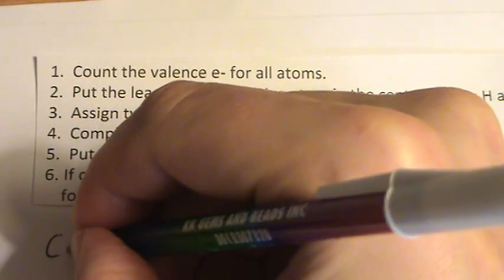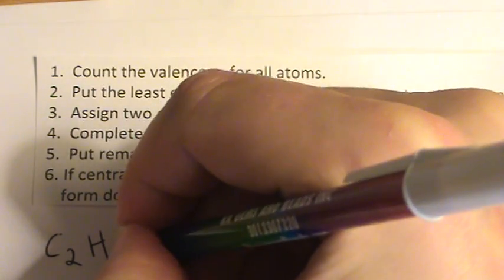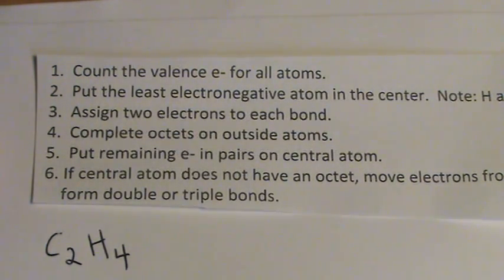Okay, we're going to do one here. This is called ethene. It's C2H4, and we want to write the dot structures for ethene.